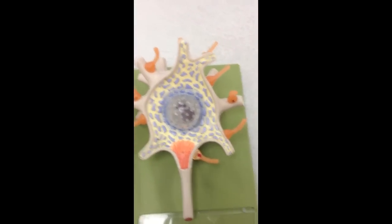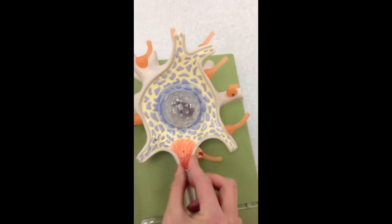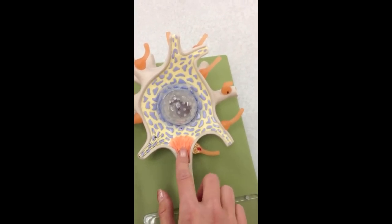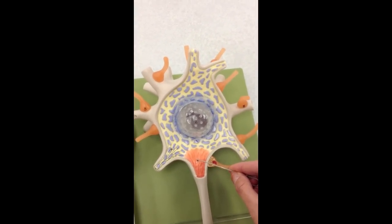Where the cell body starts to taper off right here into the axon, this is the axon hillock.